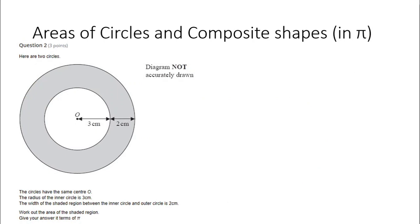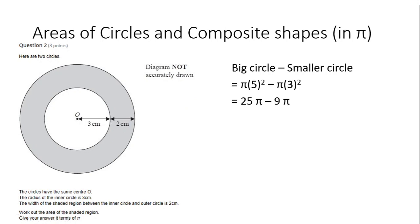Second question: we've got a circle with a circular hole in the middle of it. We're going to find the area of the big circle and minus the area of the small circle. The radius of the big circle is not just the 2 or just the 3 — it's the 3 plus the 2, so 5. The small circle's radius is 3. So we do pi times 5 squared minus pi times 3 squared. That's 25 pi minus 9 pi. Treating pi like a variable, 25 minus 9 gives 16 pi.